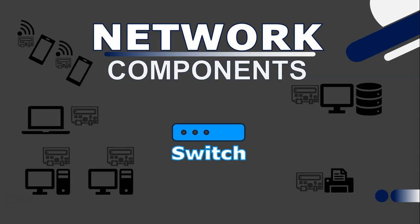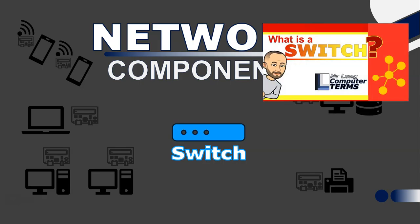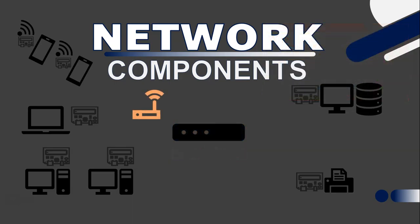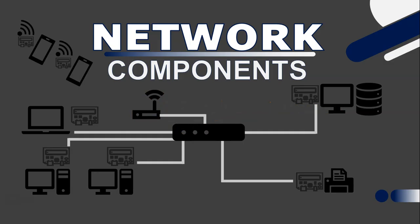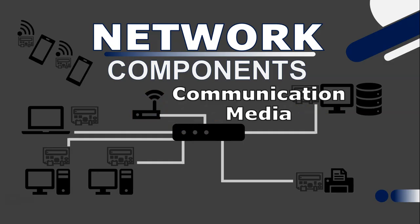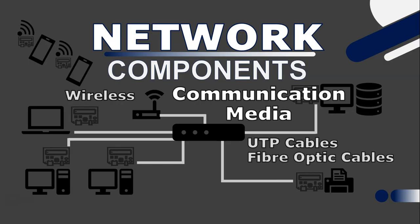Then we have a switch. A switch connects all the devices together on a network and forwards data directly to the intended destination. If you want to learn more about switches, check out our video on it — the link is in the description. If you have wireless devices in your network you will probably also need a wireless access point, which will allow wireless devices to connect to the wired network. And last but not least, communication media — this is the way all devices are physically connected together, either wirelessly using Wi-Fi or using cables like UTP cables or fiber optic cables. They are like the veins and arteries of the network, allowing data to flow between the devices.